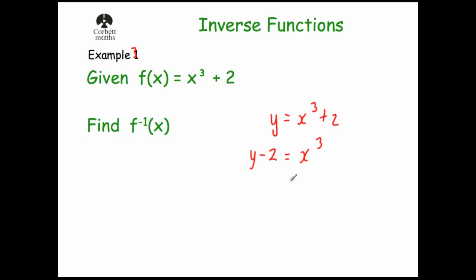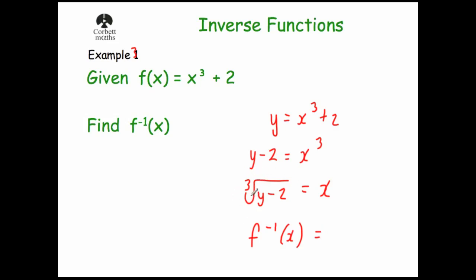If you're doing GCSE maths, don't worry too much about domains and ranges, but if you're doing A-level there's another video you'd want to watch. Cube rooting both sides gives: ∛(y − 2) = x. So f⁻¹(x) = ∛(x − 2), replacing y with x. That's how to approach inverse functions questions.